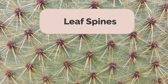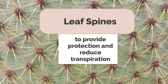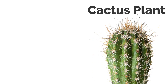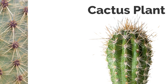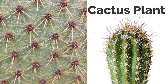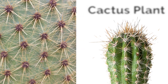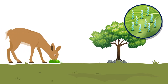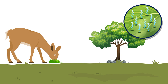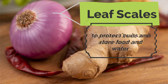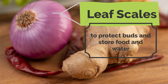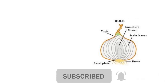Leaf spines provide protection and reduce transpiration. When you observe a cactus plant, the green spines — that broad structure — are nothing but its leaves. They protect the plant from animal grazing and reduce transpiration. Leaf scales protect buds and store food and water. You can observe scales of onion protecting the bud as well as storing food and water.